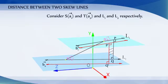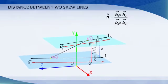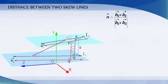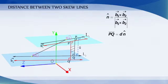The unit vector N along PQ would be N equals B1 vector cross B2 vector divided by modulus of B1 vector cross B2 vector. If D is the magnitude of the shortest distance vector, then vector PQ equals D times N cap.